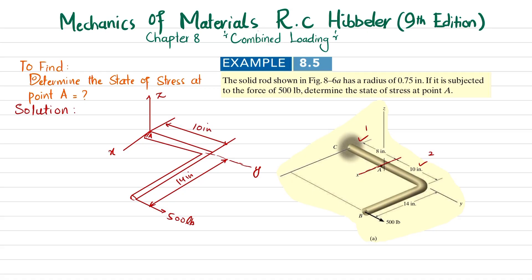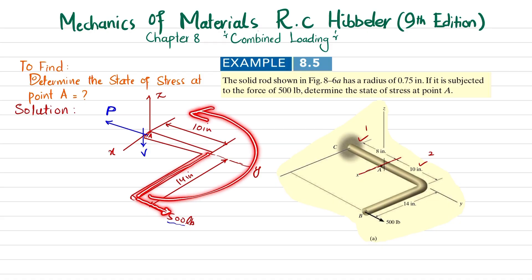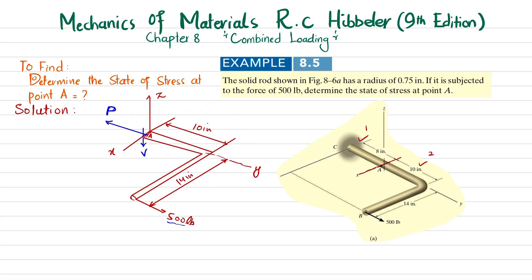At the cut section, since the 500-pound force acts in the y-direction, there will be a normal force P at the center. There is also a shear force V in the z-direction. The 500-pound force acting at a perpendicular distance of 14 inches produces a counterclockwise moment about the z-axis, so we need a clockwise moment M to balance it.